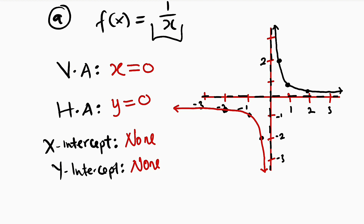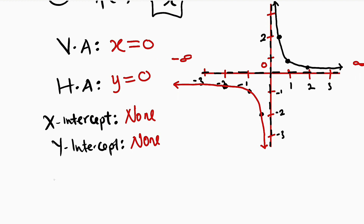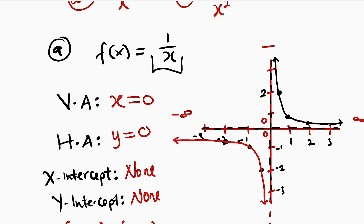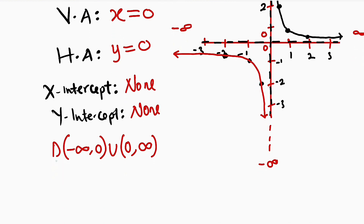Now let me show how to find the domain and range. The domain is all possible values of x. From the graph, x runs from negative infinity up to 0, excluding 0, then from 0 to positive infinity. So the domain in interval notation is (−∞, 0) ∪ (0, +∞). For the range, y also goes from negative infinity to 0 and from 0 to positive infinity, so the range is (−∞, 0) ∪ (0, +∞). The domain and range are exactly the same.